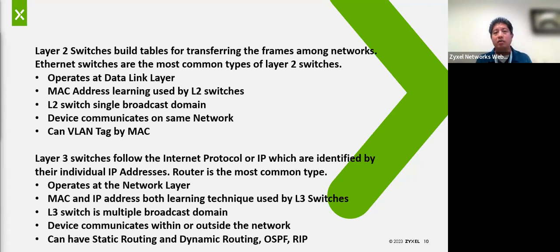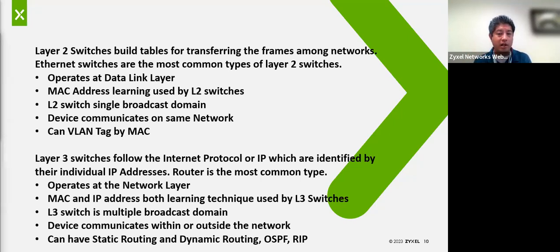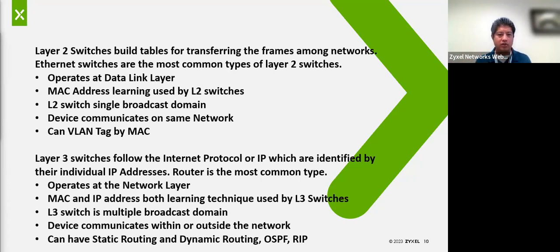Layer 3 is typically used for a multi-broadcast domain, not necessarily for different VLANs — keep that separate. People, I think, are confusing VLANs and different broadcast domains. Layer 3 can communicate within or outside the network — it has the ability to talk at the local level like a Layer 2 switch but also route things outside of that network. They typically can have static routing or dynamic routing functionalities, OSPF or RIP, maybe even VRRP for multi-switch high availability.